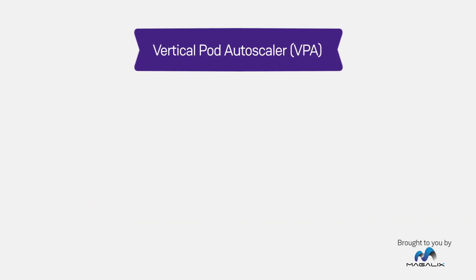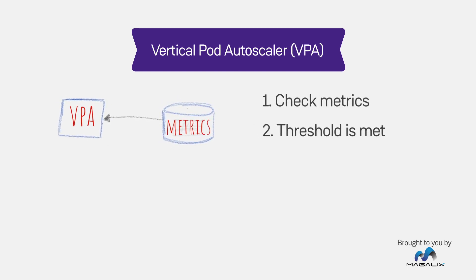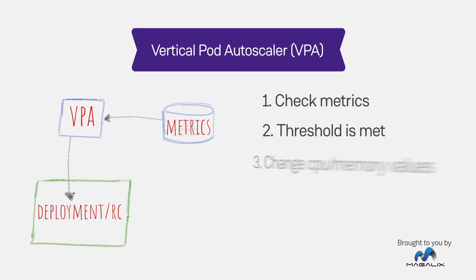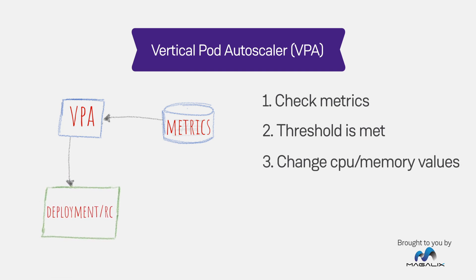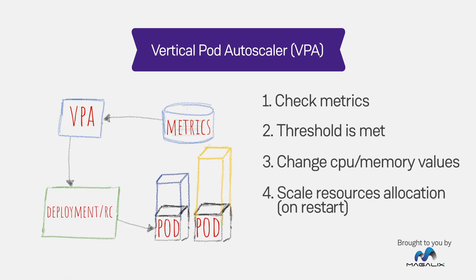The Vertical Pod Autoscaler, or VPA, allocates more or less CPU to existing pods. VPA continuously checks pre-configured metric values and attempts to change the allocated memory if the threshold is met.